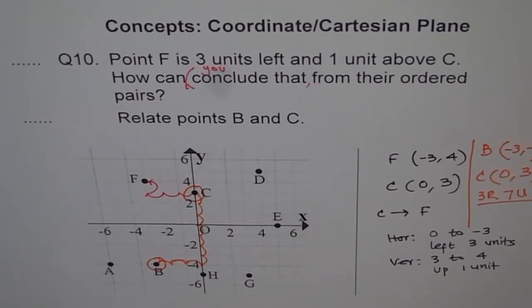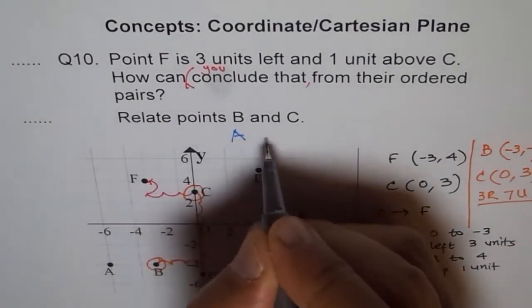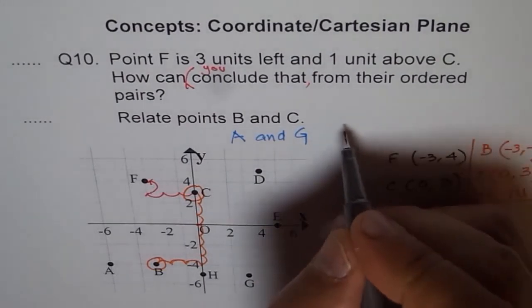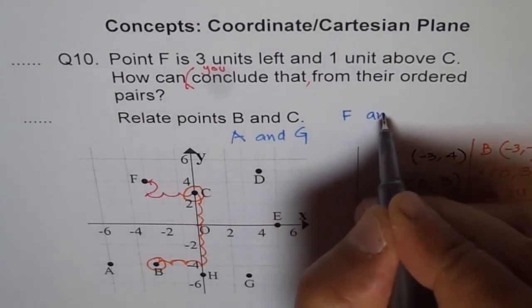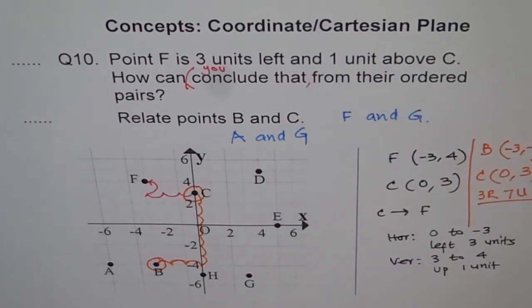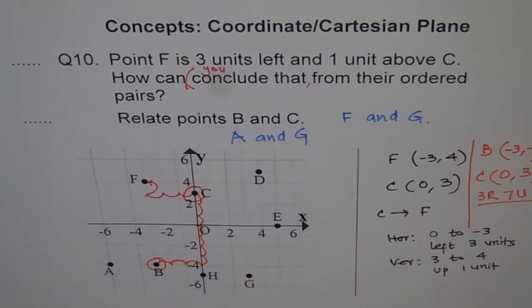Now, for you as an exercise, you can figure out how will you go from A to G, right? So you can think how are points A and G related or point F and G related, okay? So from F to G, correct? Find out how will you relate them with their ordered pairs. That should be a good exercise for you. Thank you.